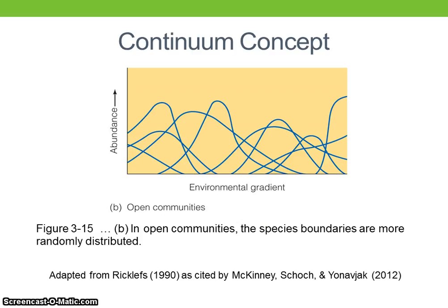In contrast, botanist H.A. Gleason presented the individualistic, or continuum, concept, which states that the relationship among coexisting species is due to similarities in their requirements and tolerances, not to strong interactions or a common evolutionary history. Instead, species distributions occur along environmental gradients but do not cluster. The resulting curves represent the independent responses of species, and the transitions are gradual and difficult to identify. In this sense, the individualistic hypothesis suggests that the distribution of a species is governed by its response to the environment.